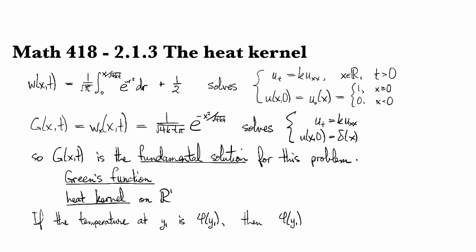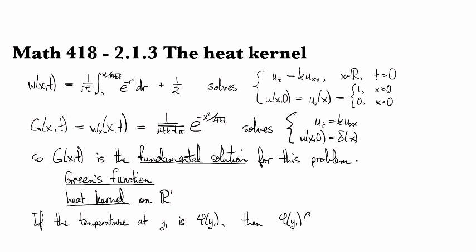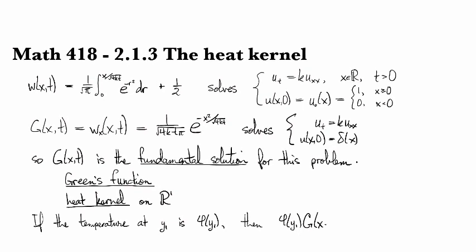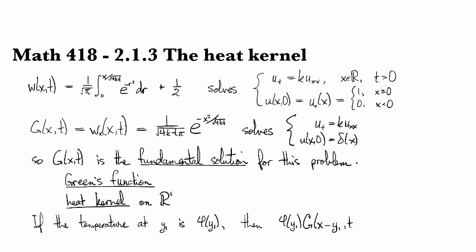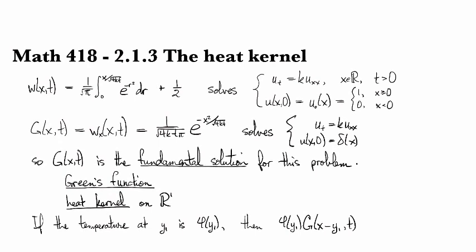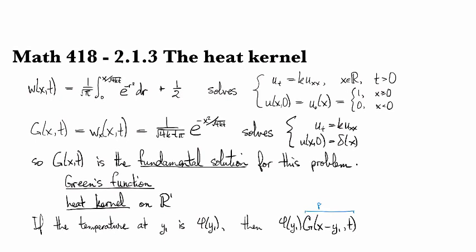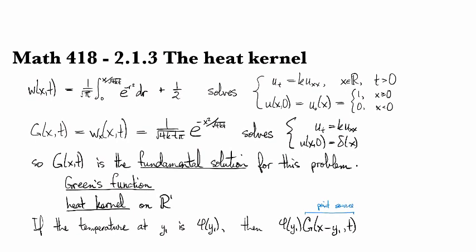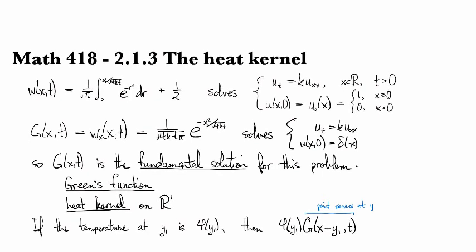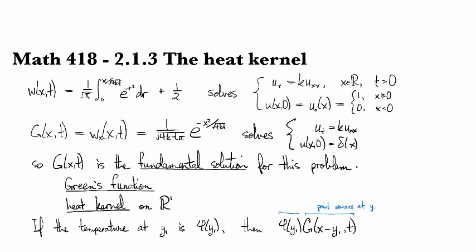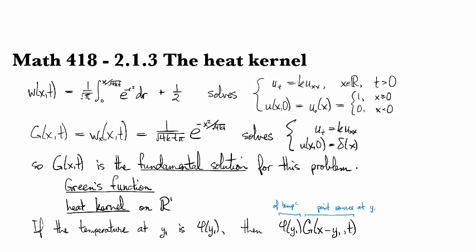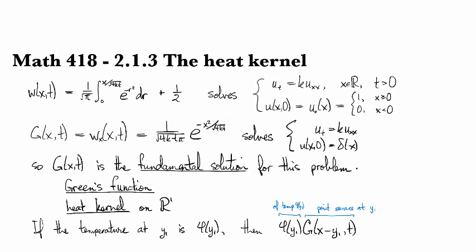Then phi y1 times, and then we translate the heat kernel right here. So this is the heat kernel for the point source at y1, phi y1 with temperature phi of y1.